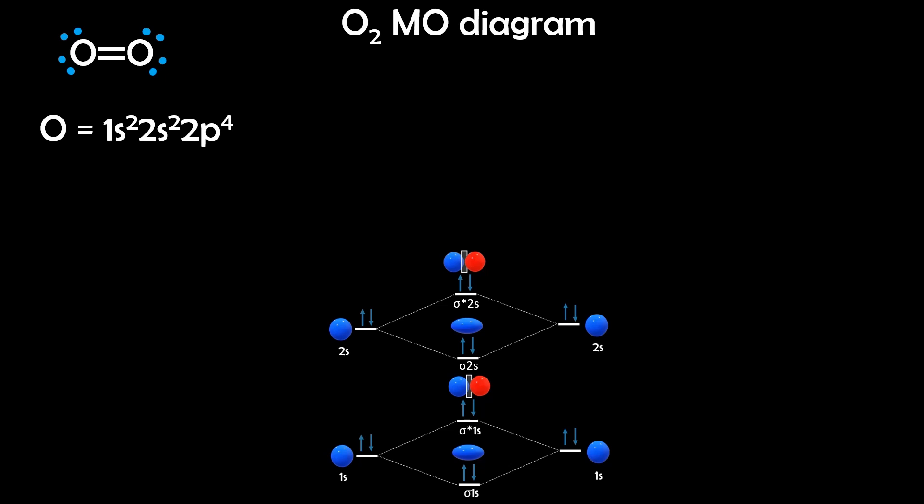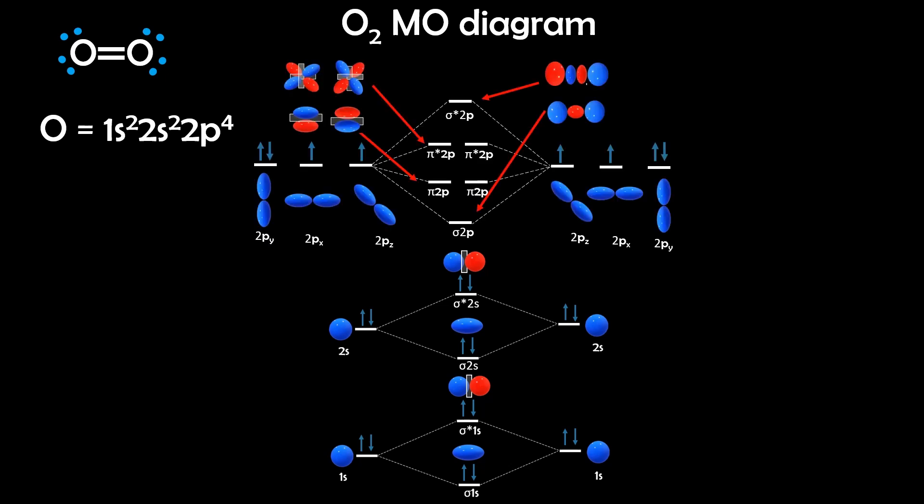So next, we look at the 2p orbitals. We have three orbitals from each atom. So we combine the p orbitals to form sigma 2p, pi 2p, another pi 2p, and the antibonding orbitals. And remember, pi is higher in energy than sigma, but anti-pi is lower in energy than anti-sigma. Also, you might have noticed that the sigma p molecular orbitals look different from the 1s. And this is because the p orbitals have a different shape to begin with, but they still satisfy the symmetry descriptions of sigma and anti-sigma.